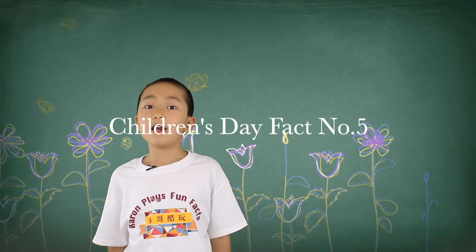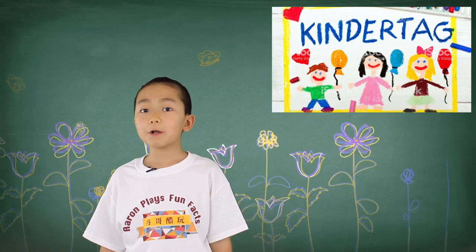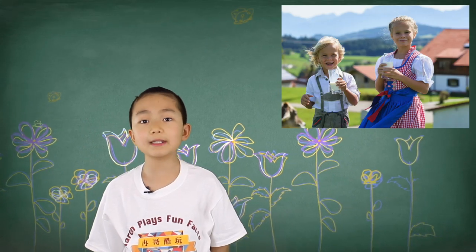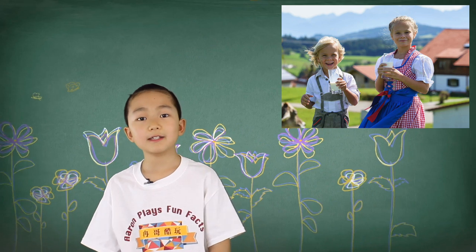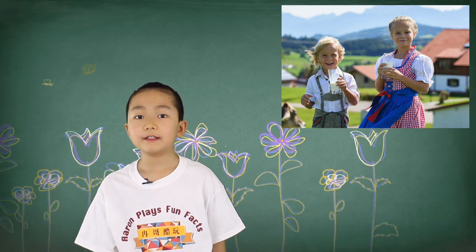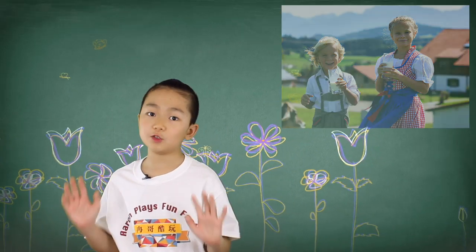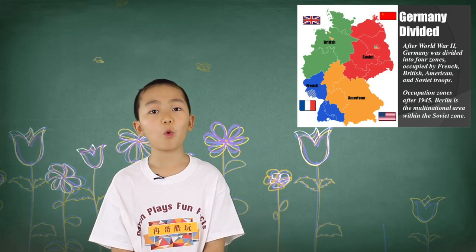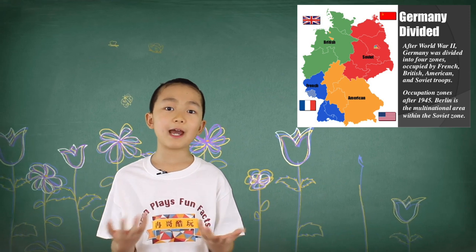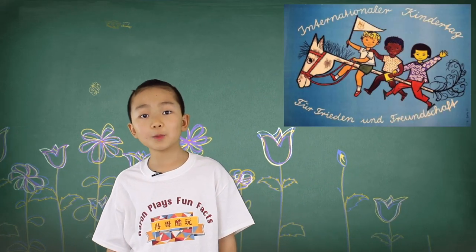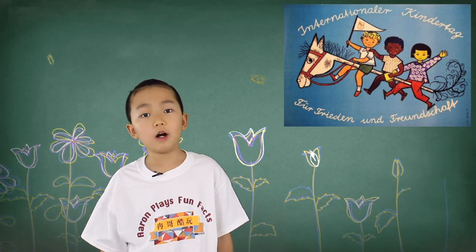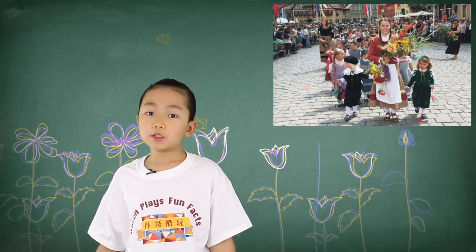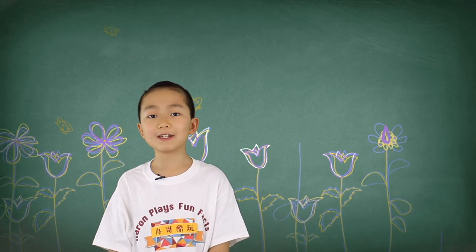Fact number five. There are two Children's Days recognized in Germany every year. While all Germans agree that celebrating their youngest citizens is a grand idea, they don't all agree on when to do it. During the Cold War, Children's Day was handled quite differently in West Germany and East Germany. East Germany celebrated International Children's Day on June 1st, while West Germany decided to celebrate Universal Children's Day on September 20th.